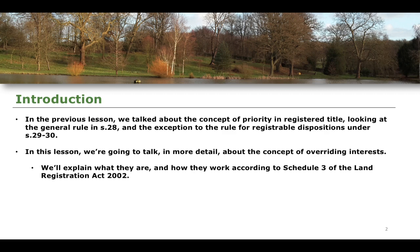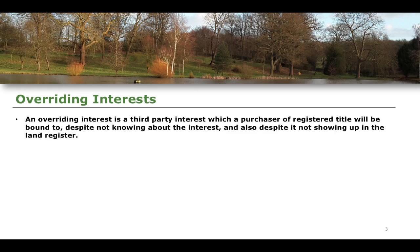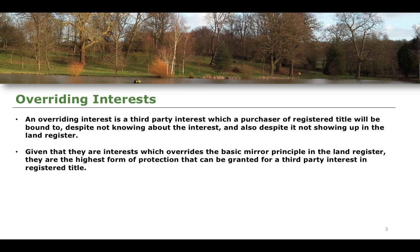We'll explain what overriding interests are and how they work according to Schedule 3 of the 2002 Land Registration Act. An overriding interest is a third-party interest, just like some of the interests we see in Section 29, but it is a third-party interest which a purchaser of registered title will be bound to uphold despite not knowing about the interest and despite the fact that it does not show up on the land register. They are the highest form of protection that you can give to a third-party interest in registered title.